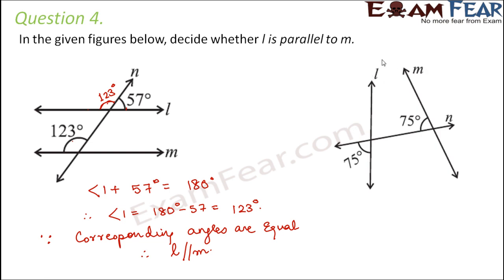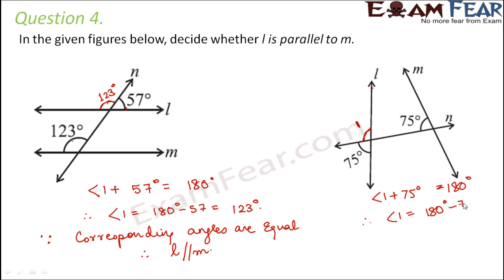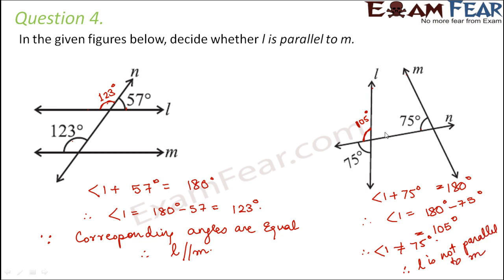For the next figure, by observation the lines appear not parallel. For the 75-degree angle, let angle 1 be the corresponding angle. Angle 1 plus 75 degrees equals 180 degrees (linear pair), so angle 1 equals 105 degrees. Since 105 degrees is not equal to 75 degrees, the corresponding angles are not equal. Therefore L is not parallel to M. When corresponding angles are not equal, alternate angles are also not equal, so the lines are not parallel.